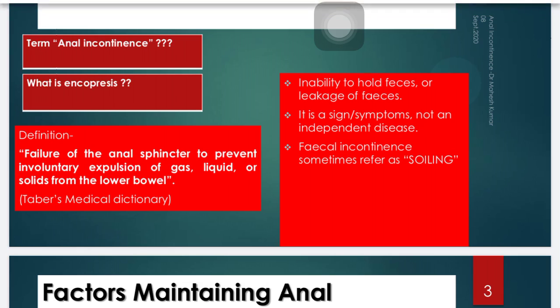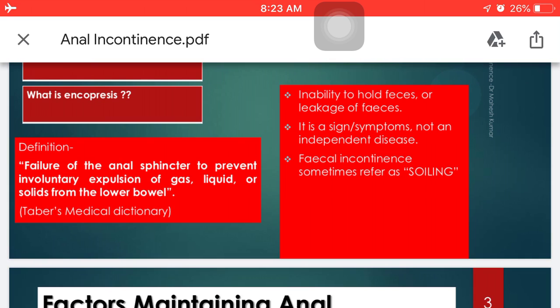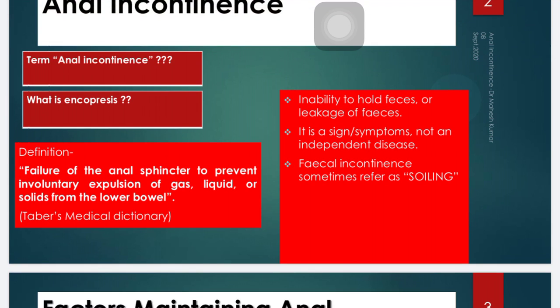The definition of anal incontinence is failure of the anal sphincter to prevent involuntary expulsion of gas, liquid, or solids from the lower bowel or rectum. The features include inability to hold feces or leakage of feces. Basically, it is a sign or a symptom, but not an independent diagnosis or an independent disease — it is related to some diagnosed underlying condition.